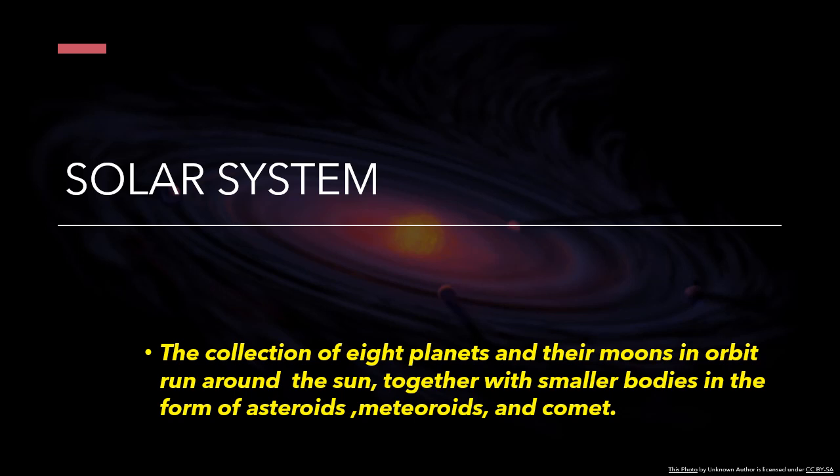Saturn, Uranus, and Neptune, dwarf planets such as Pluto, dozens of moons, and millions of asteroids, comets, and meteoroids.